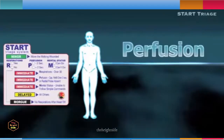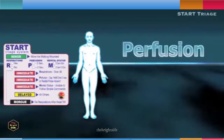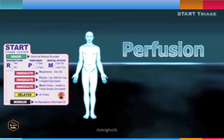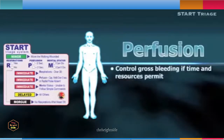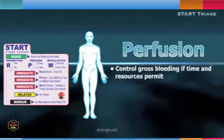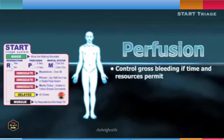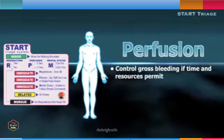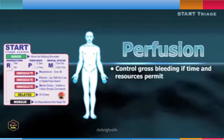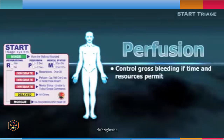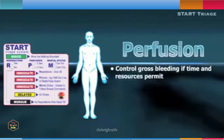Perfusion: if the patient is breathing effectively at a rate less than 30 times per minute, the triage team member should next evaluate the perfusion status of the patient. Gross bleeding that can be quickly controlled with direct pressure should be immediately addressed. A bystander can assist in maintaining pressure until more first responders are available in the triage area.